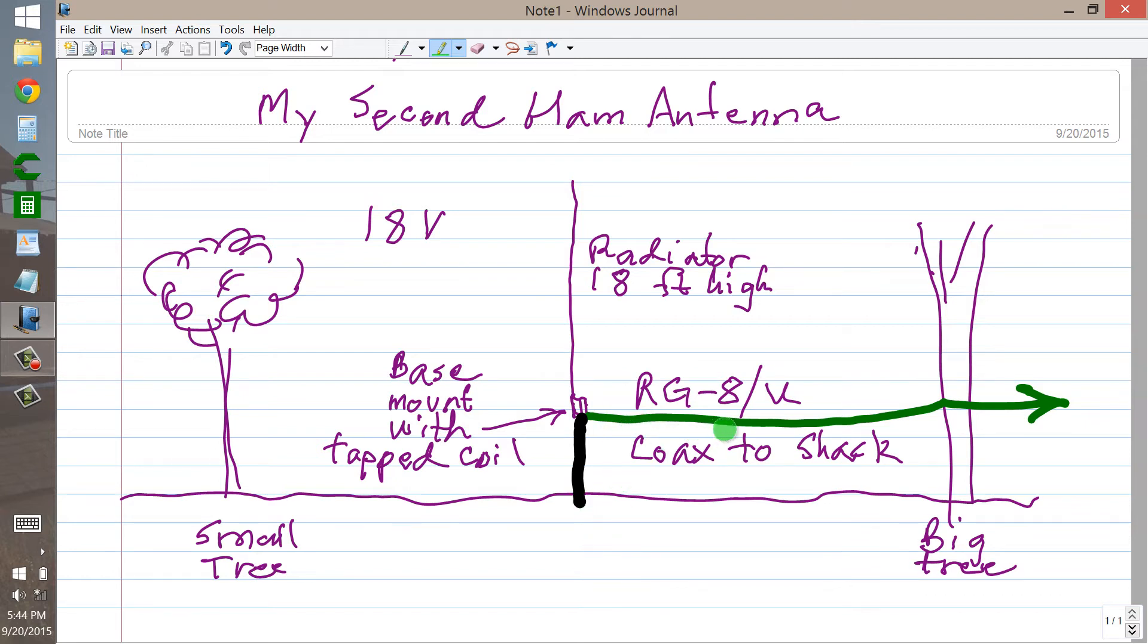Then, of course, the same coax that used to go to my original dipole antenna, my first antenna, I cut it off and connected it to the base of this vertical. There were no radials. This thing was, however, well-grounded, but there were no radials whatsoever. And this was my second ham radio antenna, a vertical as WA0OKV in Rochester, Minnesota, circa the late 1960s and early 1970s.